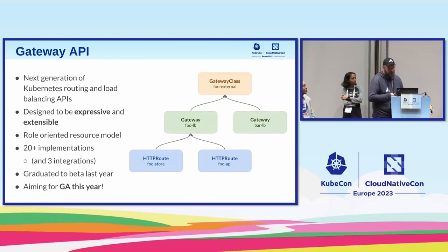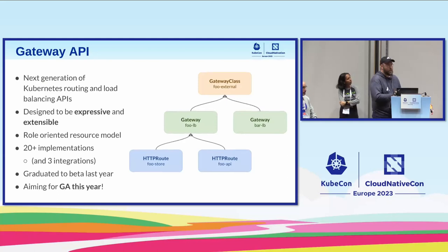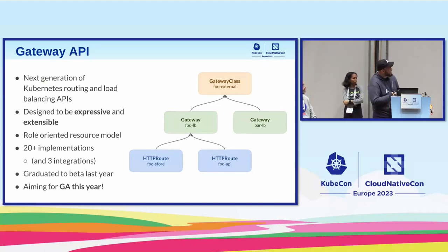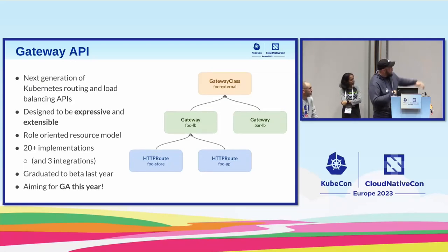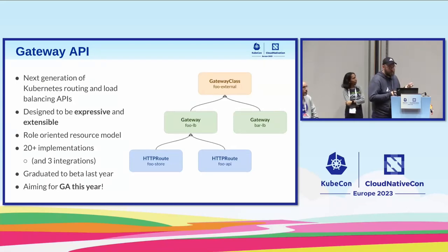Gateway API is the next generation — rather, an alternative — and handles routing and load balancing in a similar way but with many more features than what ingress provided. It's expressive, extensible, and role-oriented. You can see resources like gateway class, gateway, and HTTP route. HTTP route is the closest thing to ingress. Gateway class is similar to ingress class — an admin might create a gateway, but a developer might create an HTTP route. There are beyond 20 implementations and integrations today, despite it still being in beta.